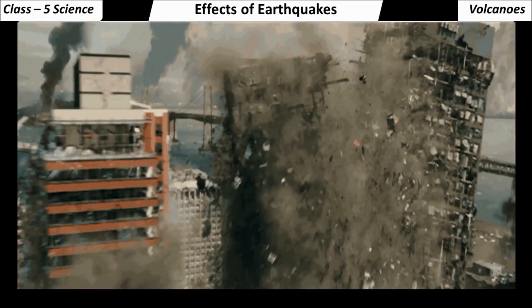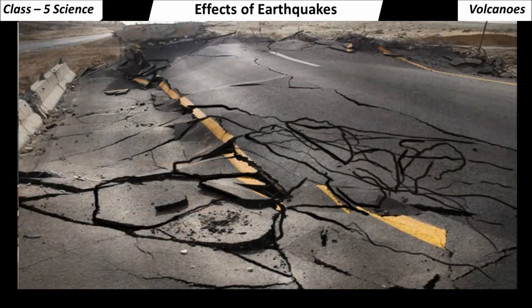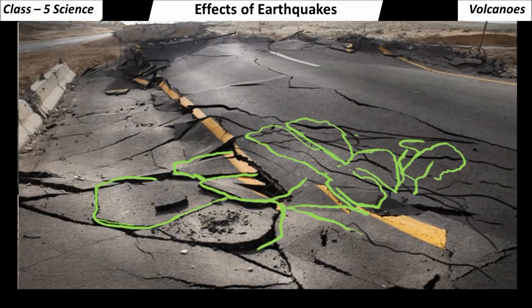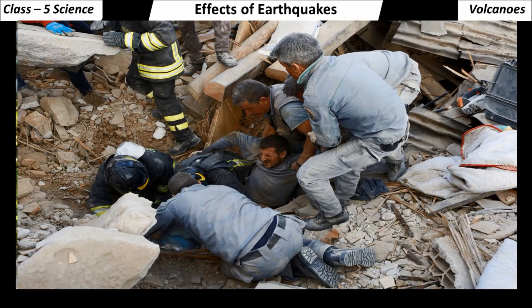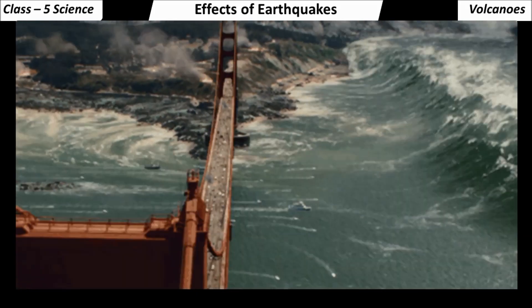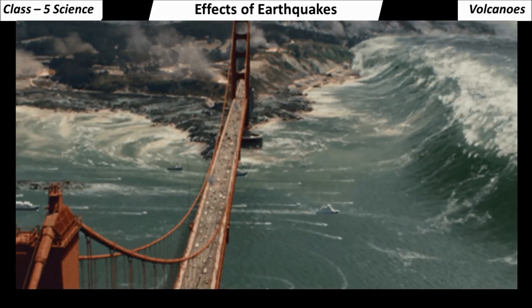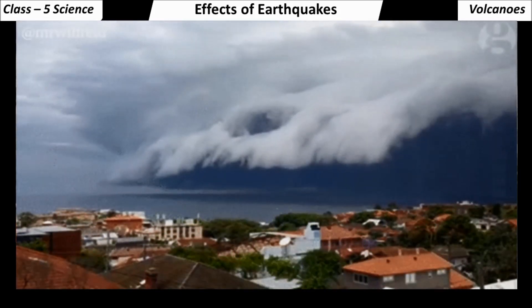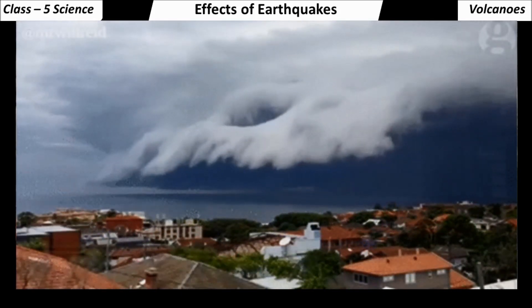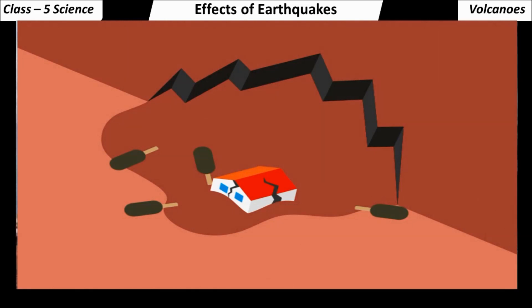An earthquake, especially a strong one, always causes destruction of property. Buildings may develop cracks or even fall down, roads and bridges get damaged, trees get uprooted, and many people lose their lives by getting trapped under heavy slabs that have fallen. Earthquakes can also occur under the sea, and an undersea earthquake can cause other disasters such as tsunamis, landslides and fires.